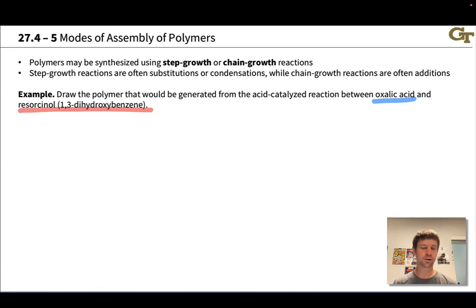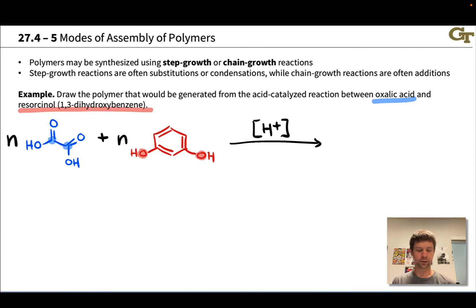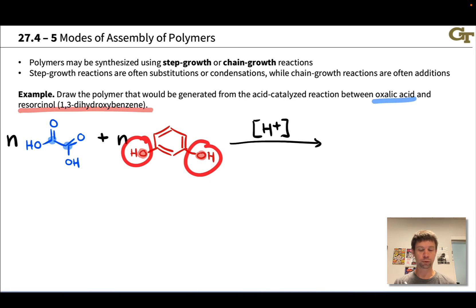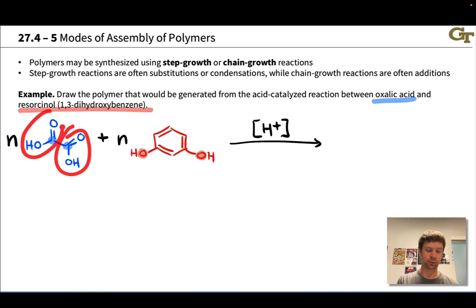We should start by drawing the monomer structures under acid-catalyzed conditions and thinking about what's going to happen. Oxalic acid has two carboxylic acid groups, and resorcinol has two hydroxyl groups. So resorcinol looks like a dinucleophile with two nucleophilic hydroxyl groups, and oxalic acid looks like a dielectrophile with two carbonyl groups.